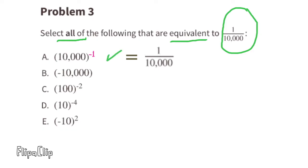Option B: Negative 10,000. No — negative 10,000 has the value of negative 10,000, which is different from 1 over 10,000.